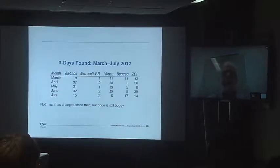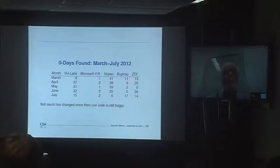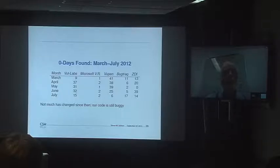Here are just some numbers from about three and a half years ago on the number of vulnerabilities found per month. There's been some change, but not very much — we're still seeing lots of new vulnerabilities. Our code is still buggy. Buggy software is the oldest unsolved problem in computer science, and I expect it to remain that way for many years to come.